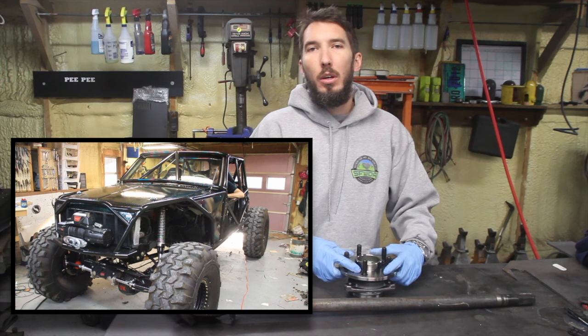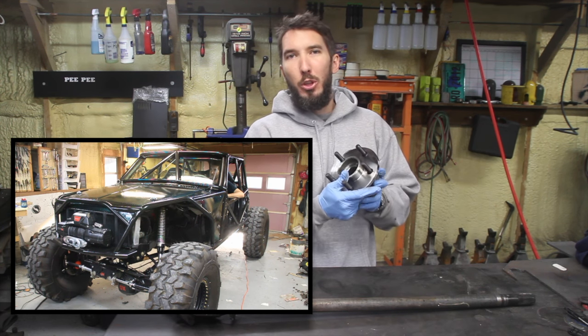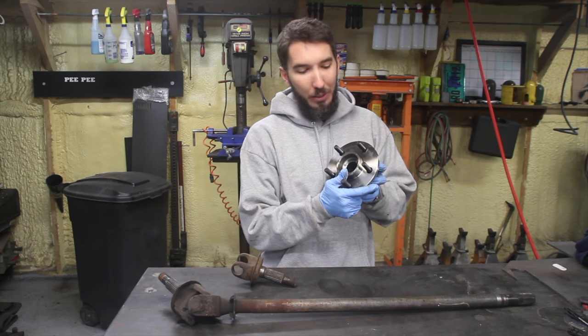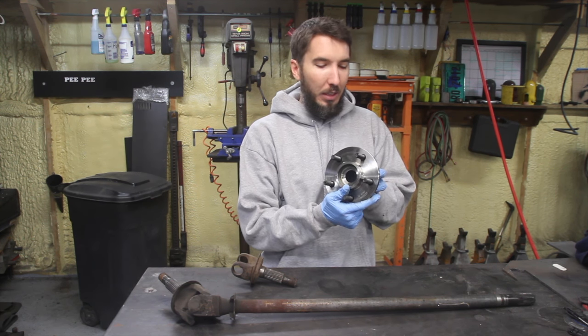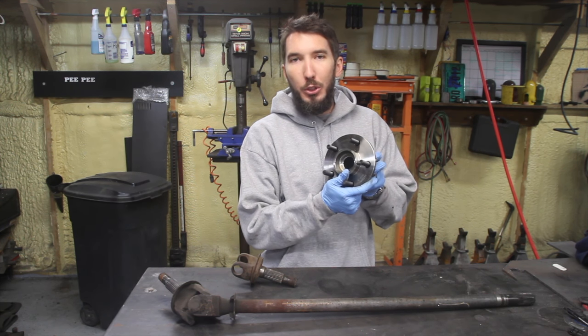So when I built the Scorpion crawler, I ordered these special 30-spline unit bearings. Some people call them hubs, axle bearings, whatever, but they're actually called unit bearings.